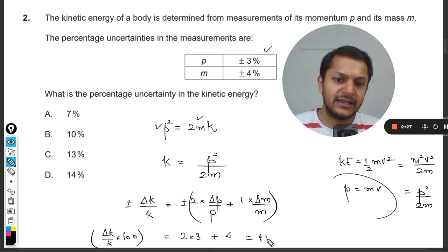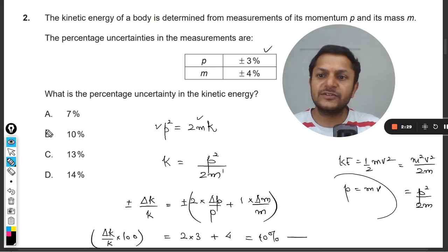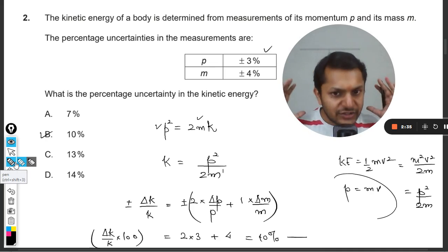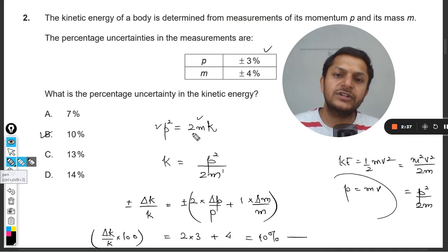Thereby 3 times 2 is 6, plus 4 is 10. So clearly it is going to be B, that is the 10 percent error when you are going to calculate the kinetic energy. So this is how we do this question my dear students.